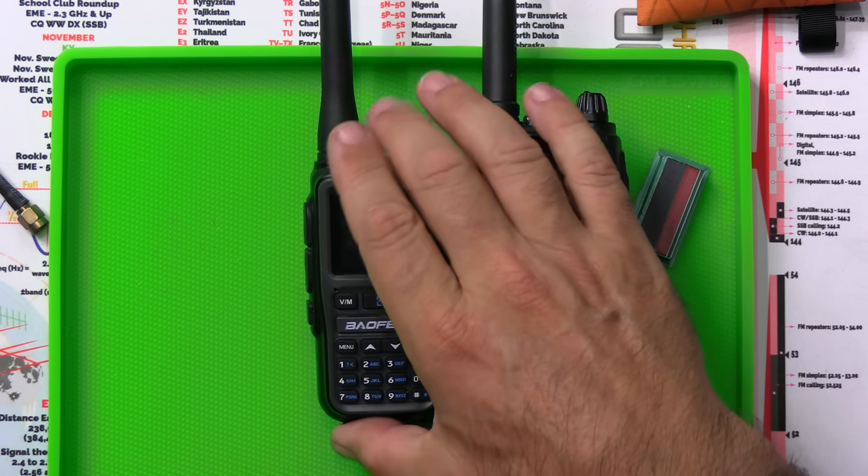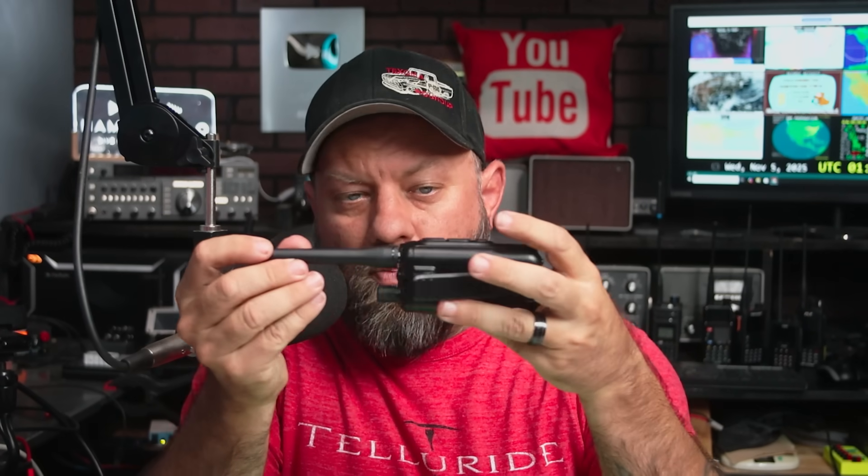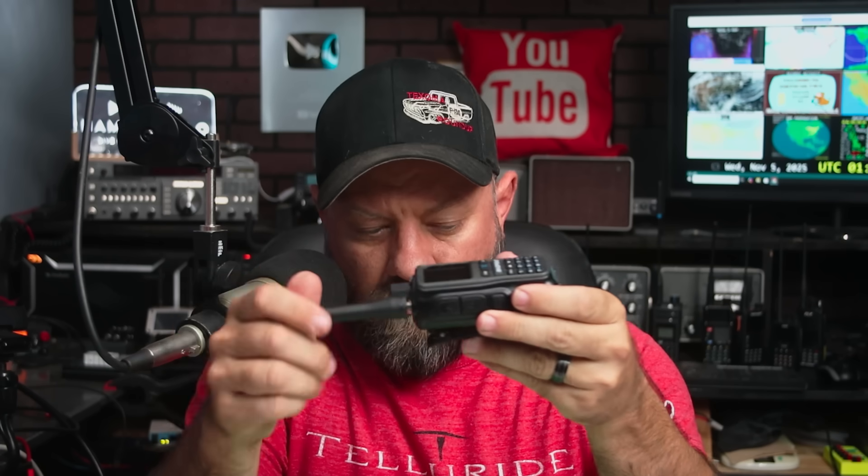And quite frankly, I was worried that it was going to be a poor performer. Now, the thing I've always heard about Baofengs is that when you get a Baofeng, the first thing you do is you take this antenna right here and you throw it in the trash. And then you put a real antenna on it, such as a signal stick or a ZBM2 antenna, or maybe a Nagoya antenna. I have not done that yet.